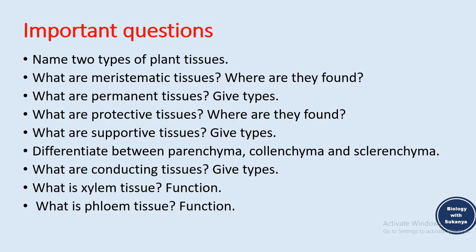Important questions from today's lecture: Name the two types of plant tissues. What are meristematic tissues and where are they found? What are permanent tissues — give their types. What are protective tissues and where are they found? What are supportive tissues — give types. Differentiate between parenchyma, colenchyma, and sclerenchyma (remember to provide diagrams to enhance your answer). What are conducting tissues — give examples. What is xylem tissue and its function? What is phloem tissue and its function?